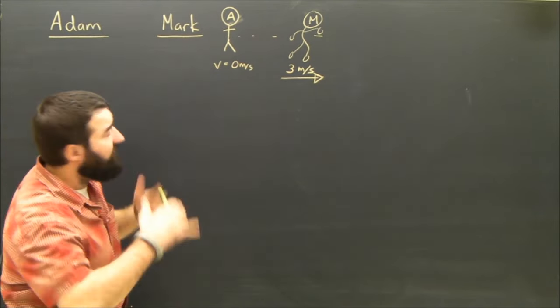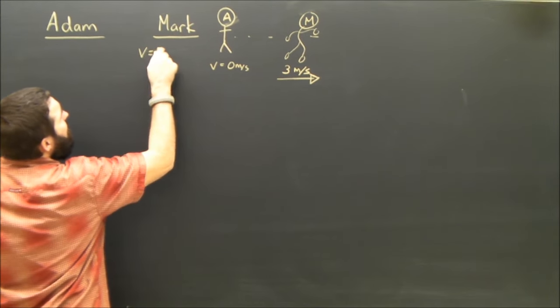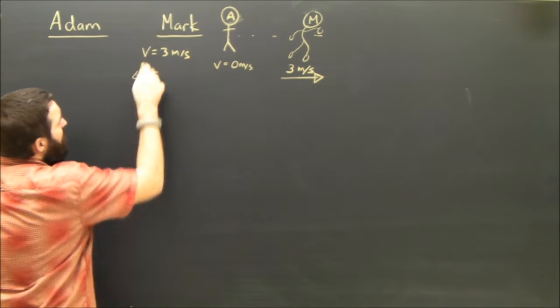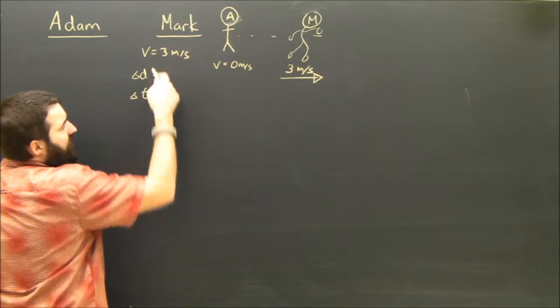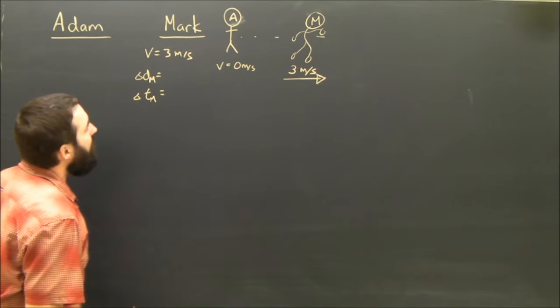We've got two people in this question, so let's do two sets of givens. For Mark, his velocity, as I just said, was 3 meters per second. He's running at a constant velocity, which means the only variables we need are v, d, and t. I'm going to call that dm for Mark, tm, the time for Mark.